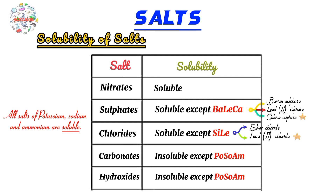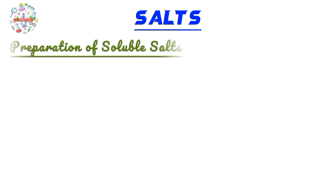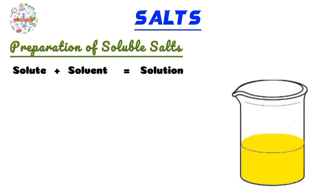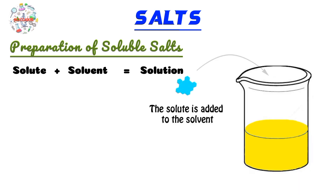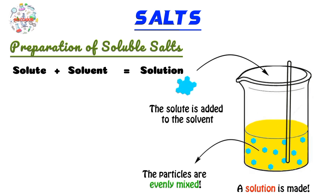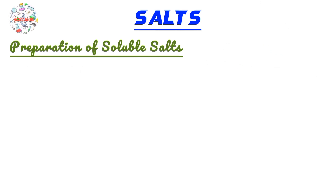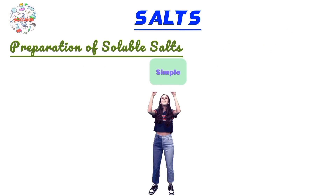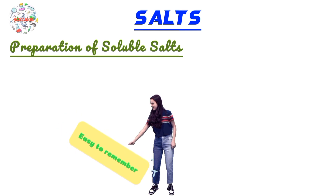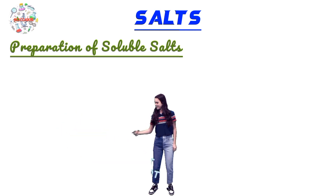If you have this information, it becomes easier for you to know which method you should use to prepare a certain salt. Moving on to the next part of our lesson: how do we prepare a soluble salt? A soluble salt is simply a salt that will dissolve in water to form a solution. I'm going to give you a super simple way to guide you in the preparation of soluble salts.